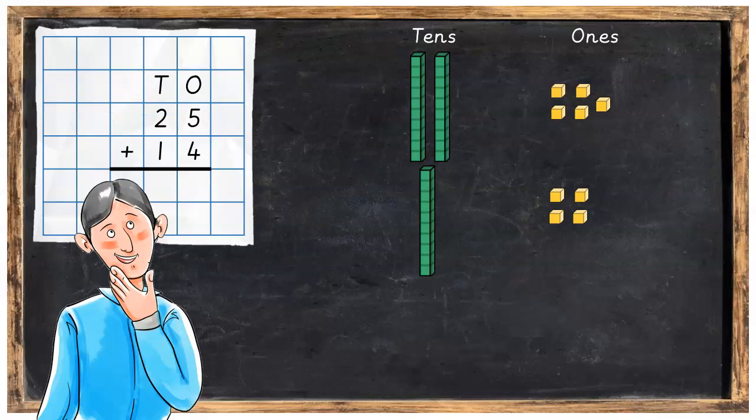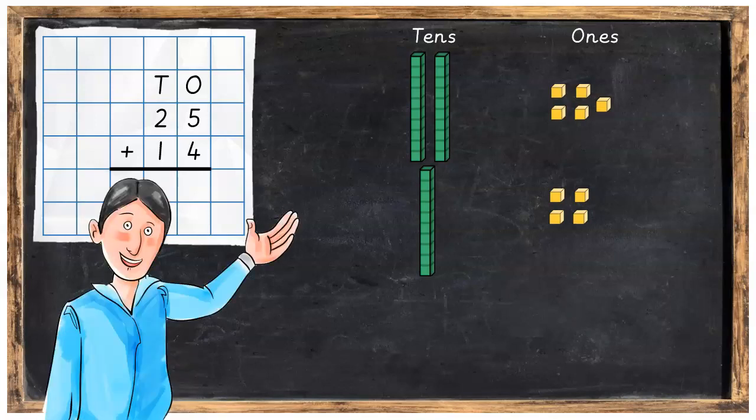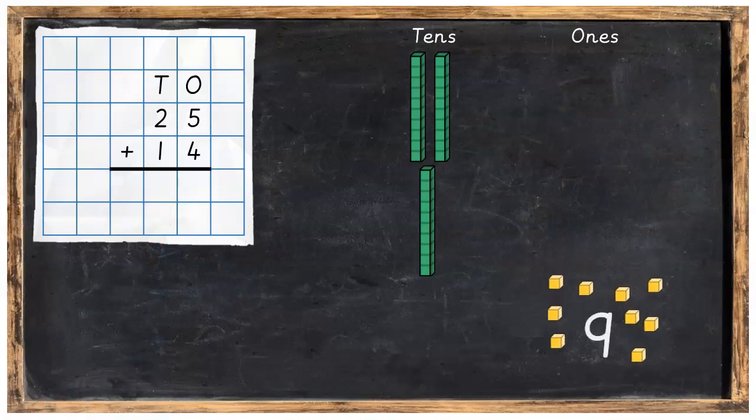What are we going to do next? Well, with any addition sum we always have to start with the ones. So we add the five ones plus the four ones and we bring them together down the bottom to make nine ones. You can organize them in a nice pile like this.